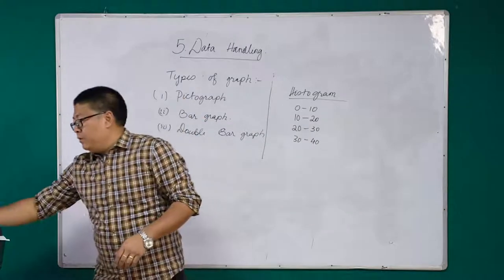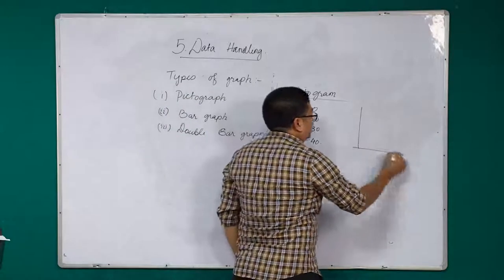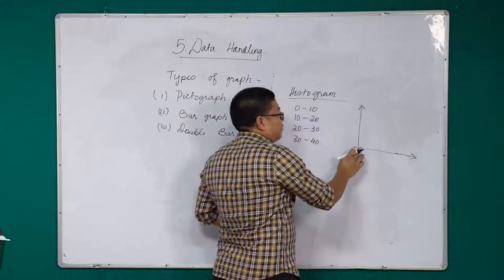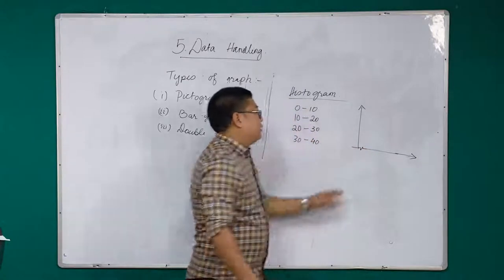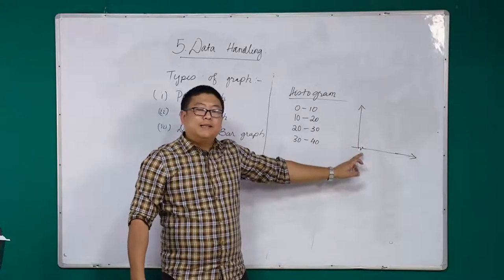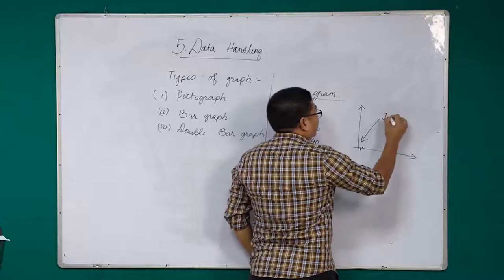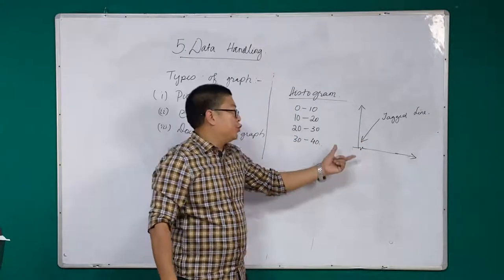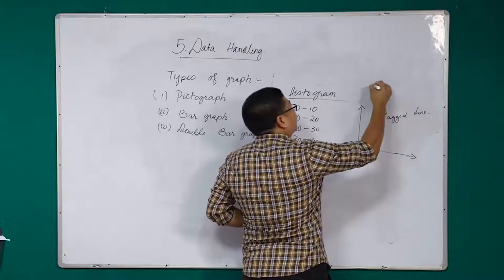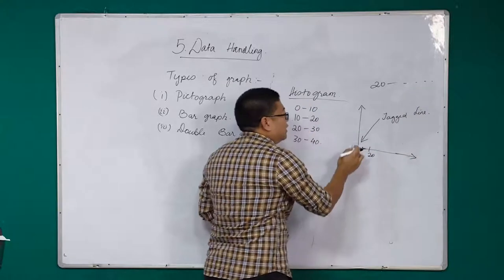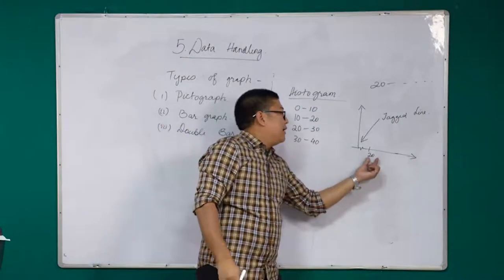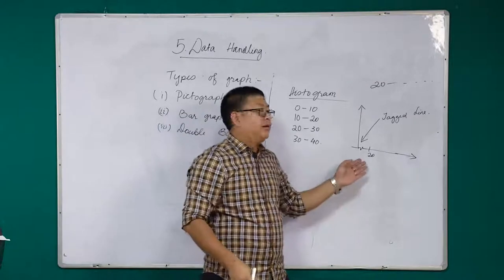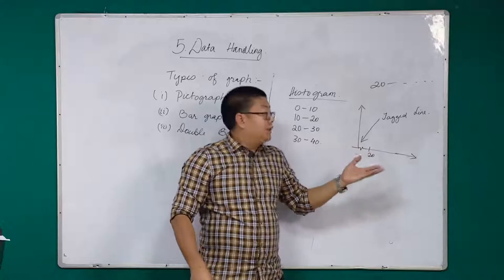Sometimes when we draw a bar graph with the x-axis and y-axis, we may see something like this — a jagged line. The jagged line's main purpose is to show that data starts only from a certain point. For example, if records start only from 20 onwards and there is no record from 0 to 19, I will directly write 20 here and put a jagged line to indicate that 0 to 19 has no information. This is not compulsory — it is up to you if you want to use it.